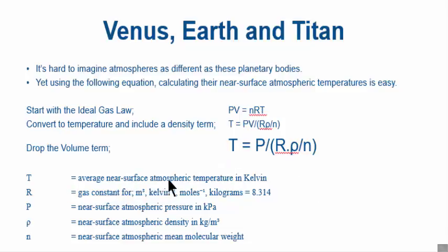So T is the average near-surface atmospheric temperature in Kelvin. P is the near-surface atmospheric pressure in kPa, which sits on top of the other parameters. R is the gas constant for cubic meters, Kelvin, moles, and kilograms, which is 8.314—you can stick that straight into R. Then you've got ρ, which is the density, near-surface atmospheric density average in kilograms per cubic meter. And n is the near-surface atmospheric mean molecular weight. So if you know those three parameters—three gas parameters: pressure, density, mean molecular weight—that's it. Plug them into this, you've got the average surface temperature. That's all you need. You don't need any greenhouse gas anything.